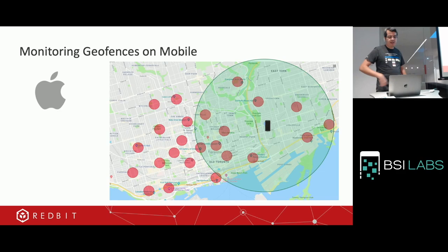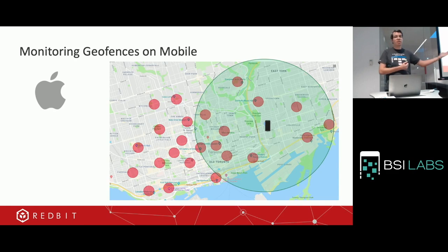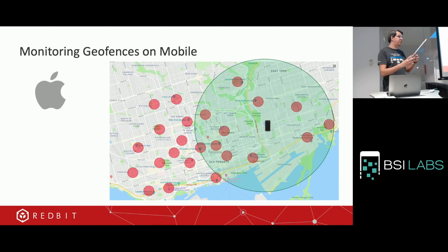The first time you use the app, the application grabs your location — latitude and longitude — and in our case we call an API server. We call the API and say: here's my location, give me the nearest 19 geofences. The server responds, and then my app gives them to the platform OS and says: please handle this for me. I monitor all the smaller geofences — where my app needs to act.